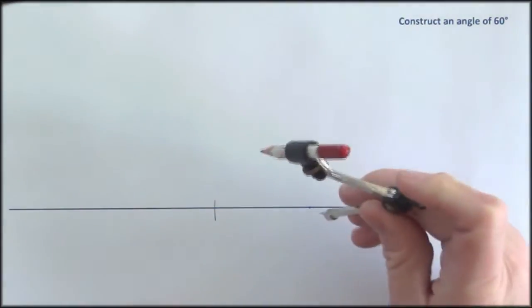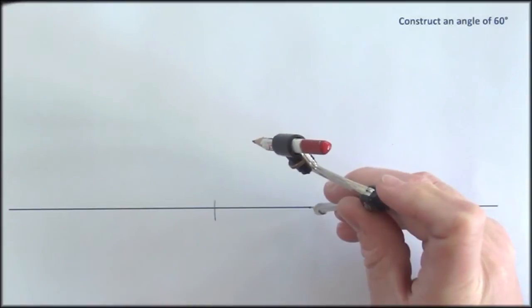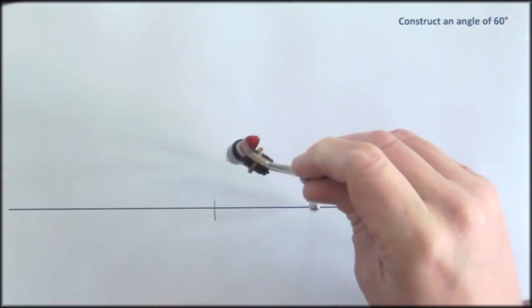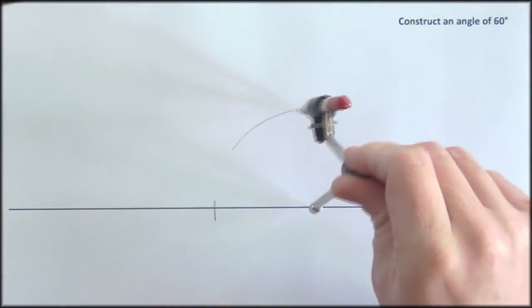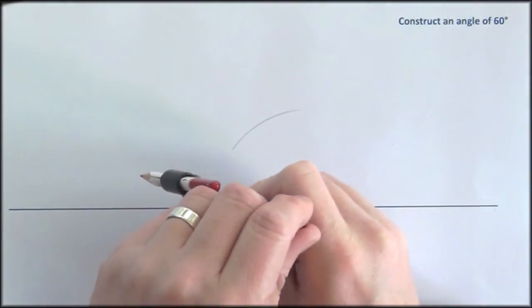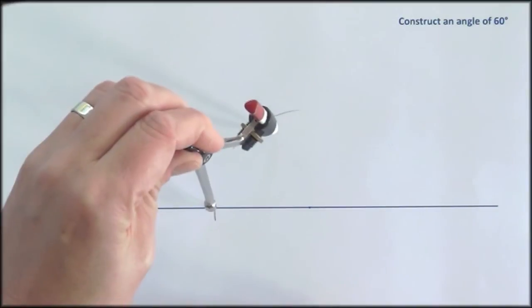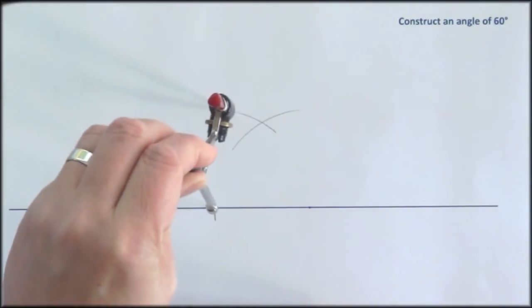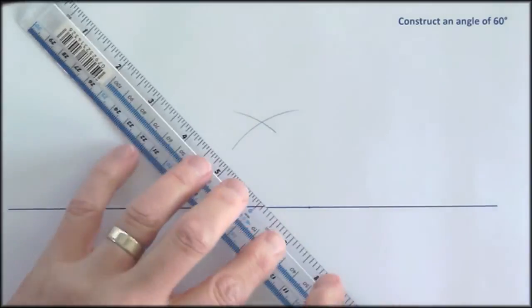So I just keep the compass set to the same width and I know the vertex is going to be up here somewhere, so draw another arc and then go to this vertex here, draw another one and that intersection point would be the third vertex of the equilateral triangle if we were actually going to draw an equilateral triangle.